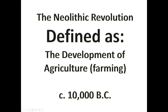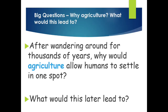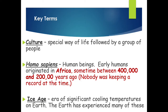The Neolithic Revolution is defined as the development of agriculture — farming. It started somewhere around 10,000 B.C., though nobody was taking notes at the time. The big questions are: why agriculture, and what would this lead to? After wandering around for thousands of years, why would agriculture allow humans to settle in one spot, and what would that lead to?